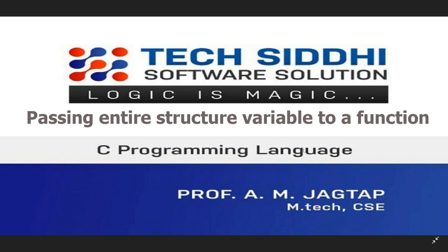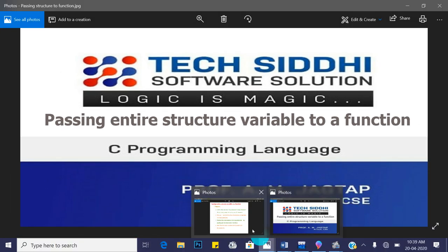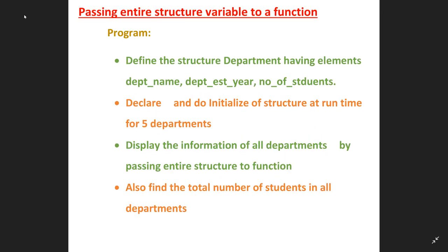Let's start with a problem statement. Define a structure called 'department' having elements: department name, department establishment year, and number of students. Then declare and initialize the structure at runtime for five different departments. After declaration and initialization, display the information of all departments by passing the entire structure to a function named 'display'.